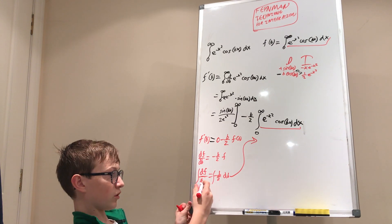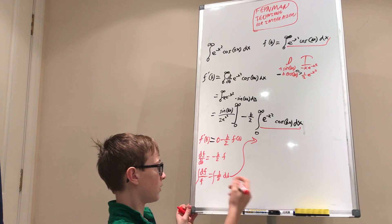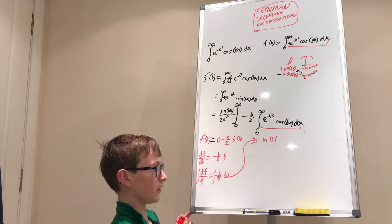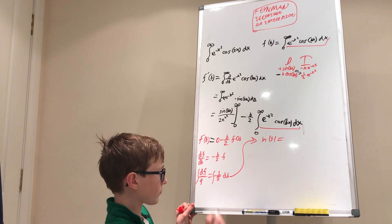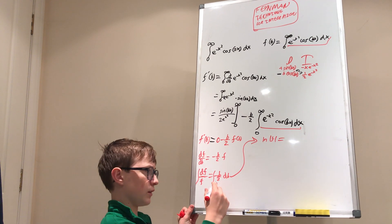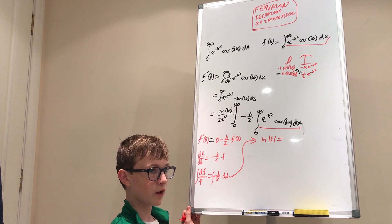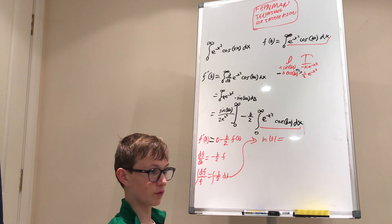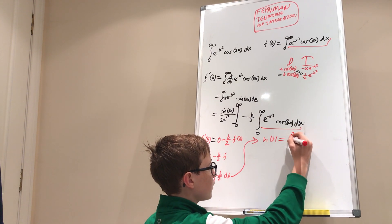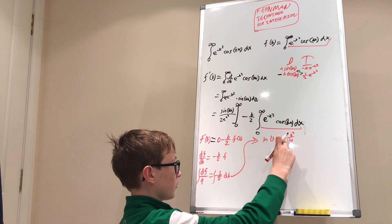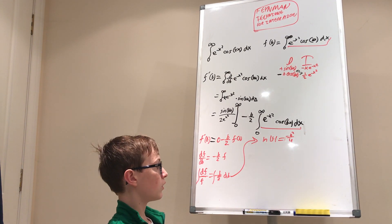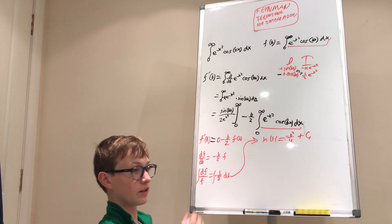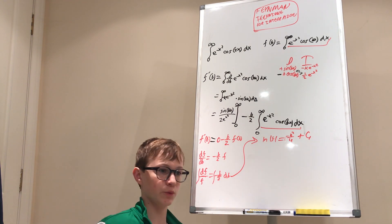The left side is natural log of the absolute value of f. The right side: the integral of negative b over two is just the power rule, giving negative b squared over four. So we get natural log of absolute value of f equals negative b squared over four plus C₁. This constant is important because we have to solve for it later.